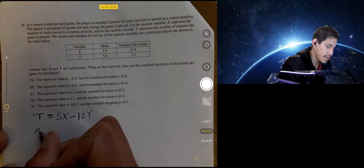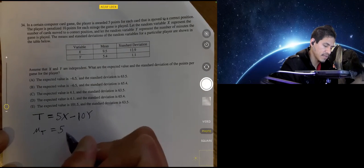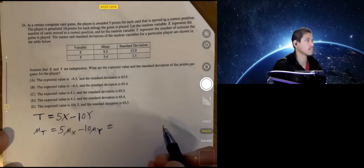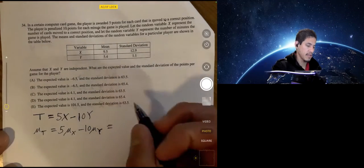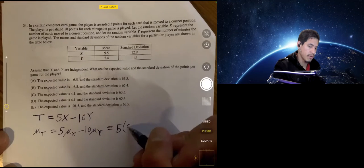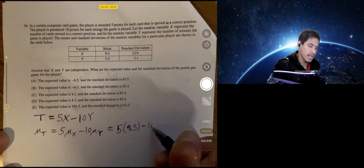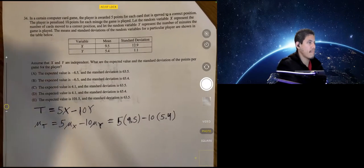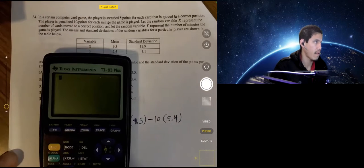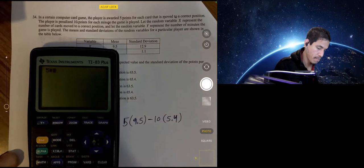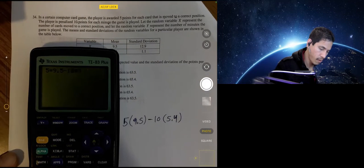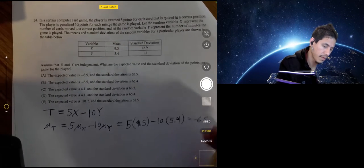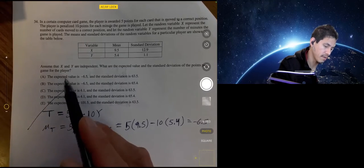So if we want to find the mean of T, that's going to be equal to five times the mean of X, minus 10 times the mean of Y. So we can use these values to be five times 9.5, minus 10 times 5.4. So negative 6.5. So we know it's going to be either A or B.